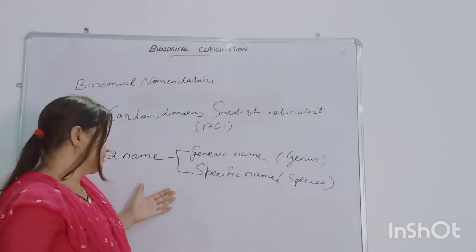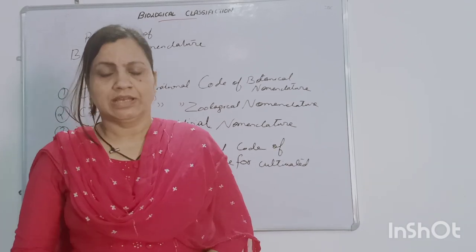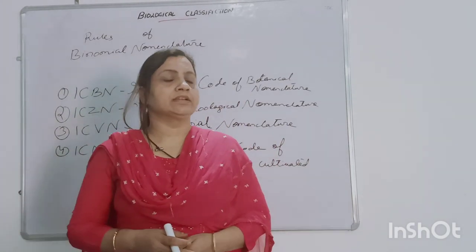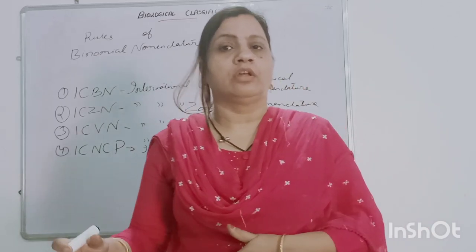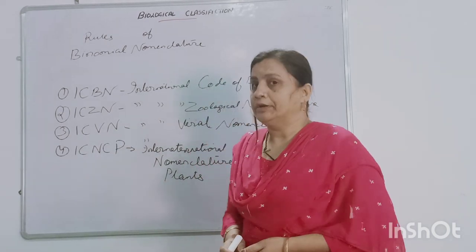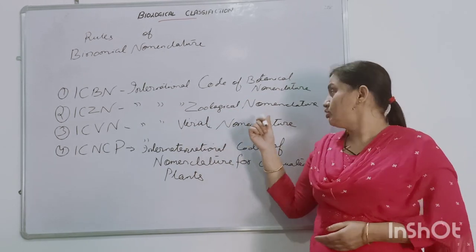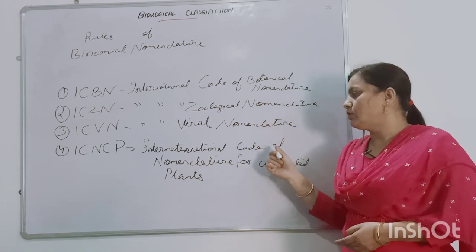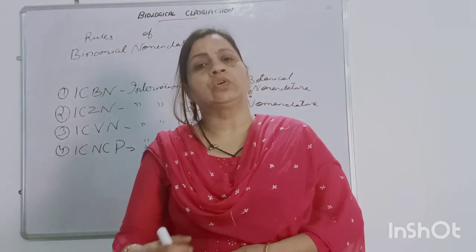The scientific name is written in italic Latin words. There are different rules of binomial nomenclature framed to avoid confusion, duplication, error, and ambiguity in scientific naming. These rules are organized into different codes: ICBN, ICGDN, ICVN, and ICNCP. ICBN is the International Code of Botanical Nomenclature; ICGDN is the International Code of Geological Nomenclature; ICVN is the International Code of Viral Nomenclature; and ICNCP is the International Code of Nomenclature for Cultivated Plants.